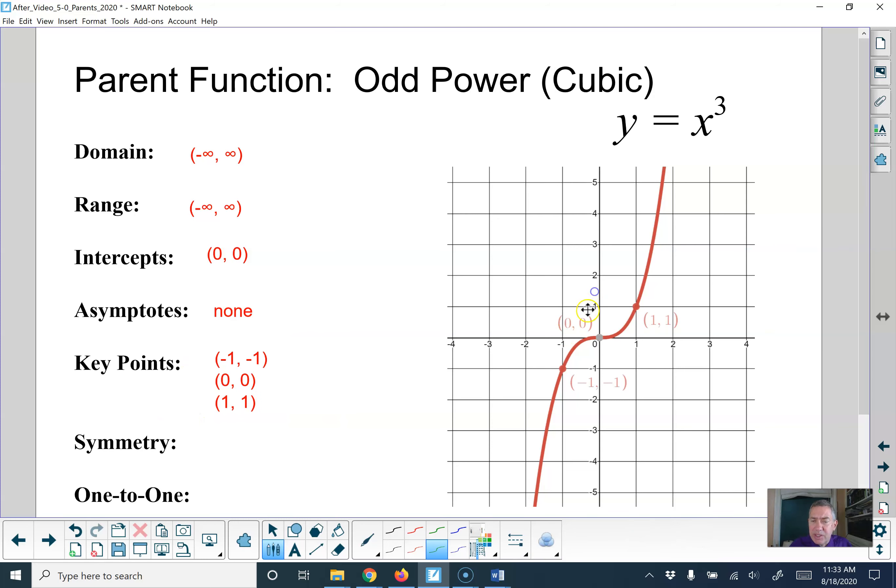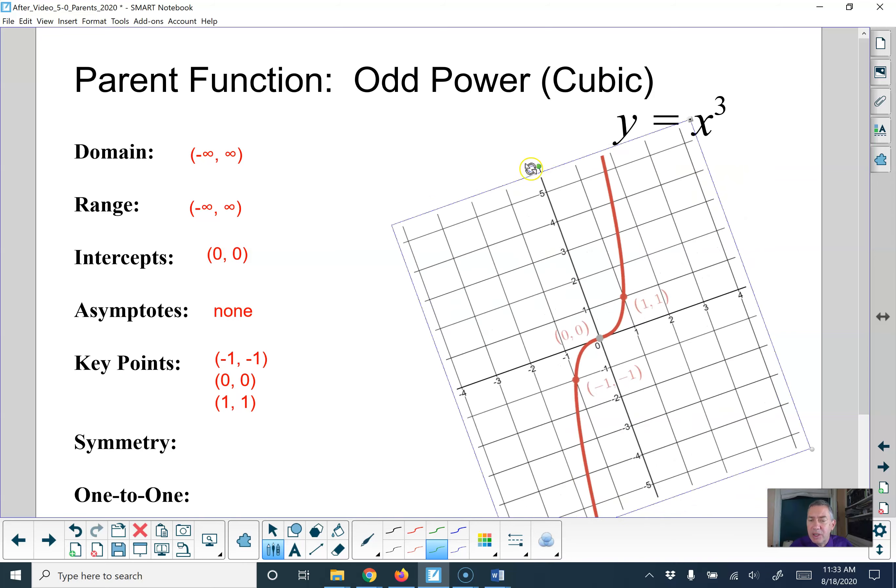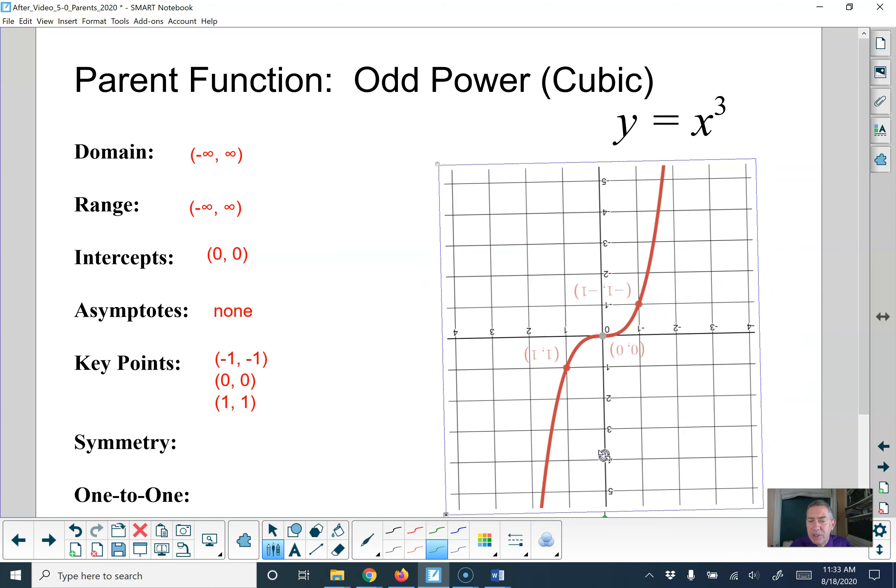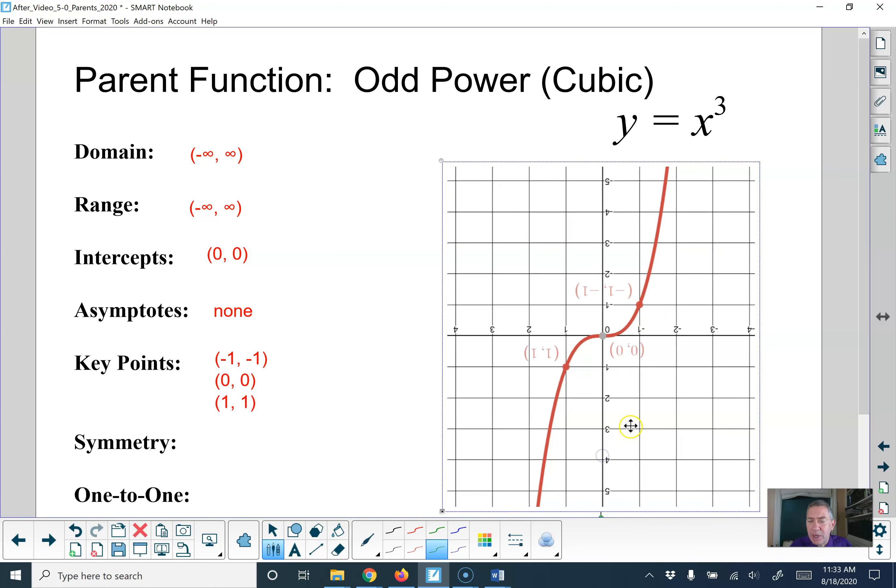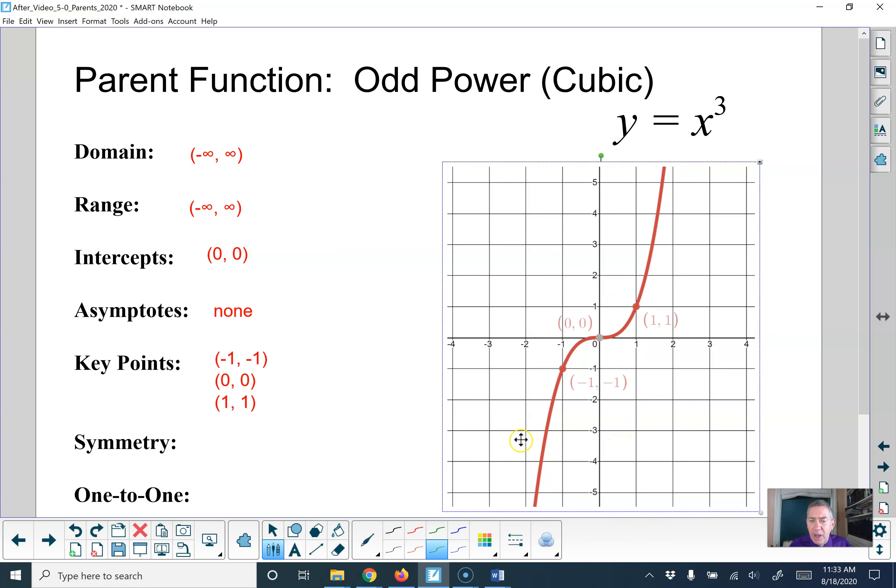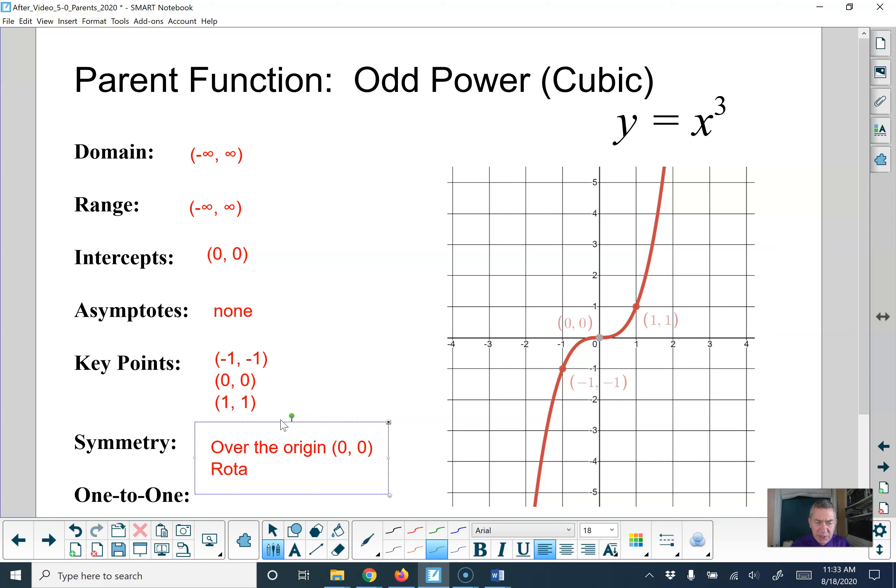You notice the symmetry. This is a nicer example of an odd function where you have 180 degree rotation symmetry. If we rotate 180 degrees, you get the same graph. It's pretty cool. So it's symmetric about the origin, 0, 0, which means that it's also rotational symmetry.